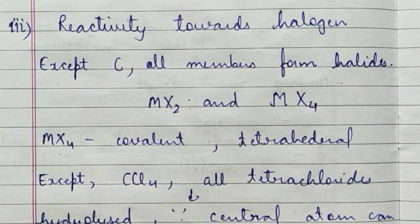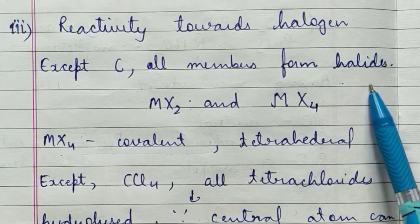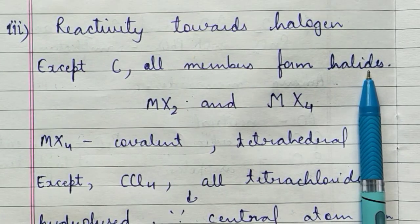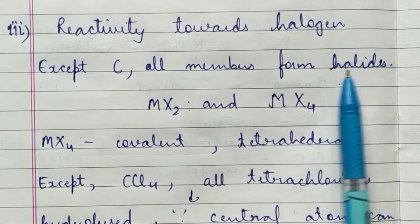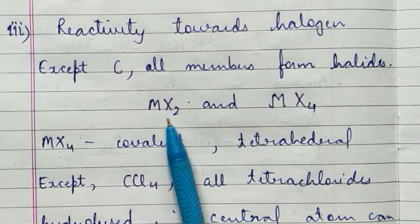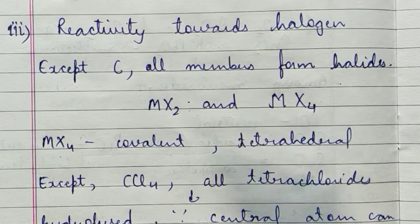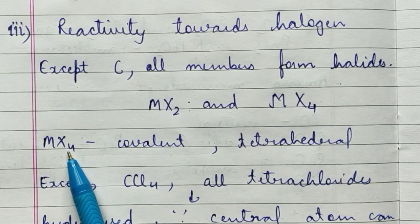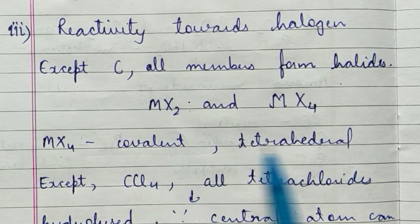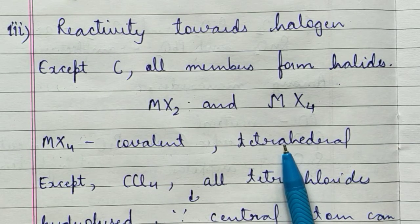Talking about reactivity towards halogens: all members except carbon react with halogens to form halides. Two types of halides are seen — MX2 and MX4. The MX4 halides involve sharing of four atoms and are covalent in nature. Their structure is tetrahedral because the central atom is sp3 hybridized.